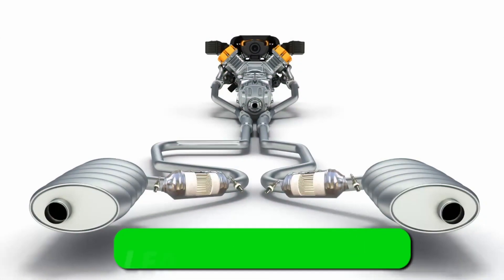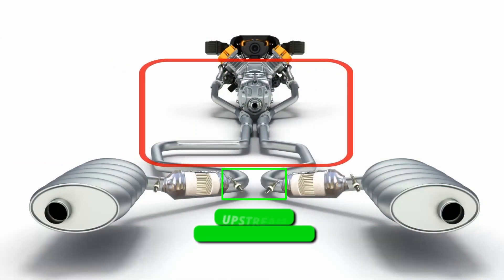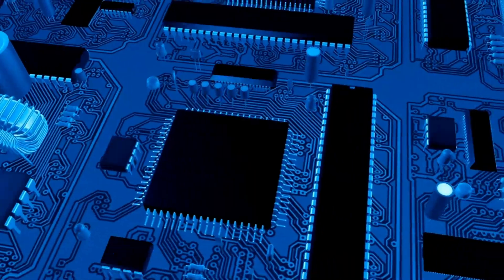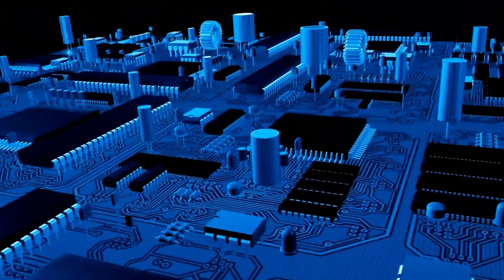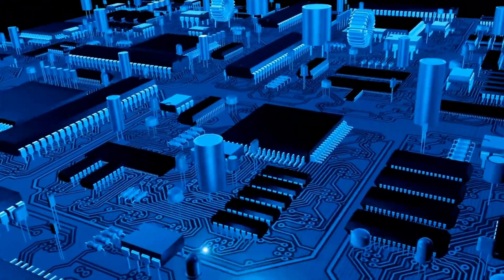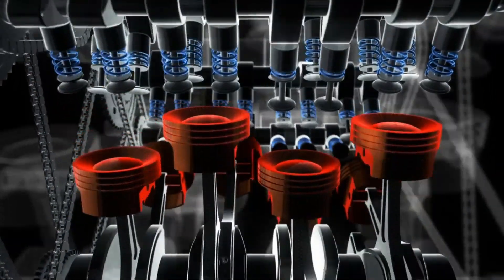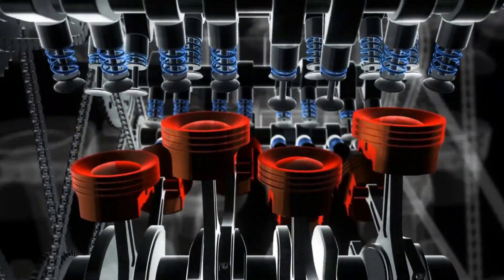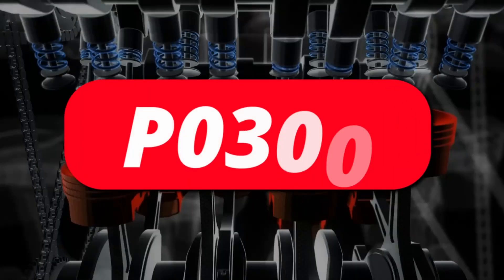Another possibility could be a leaking exhaust. If the leak is right before the upstream oxygen sensor, it will disrupt the sensor's readings. The ECM will then read those incorrect oxygen sensor values and change the amount of fuel added to the combustion chamber, ultimately throwing off the air-fuel ratio and resulting in a P0300 code.